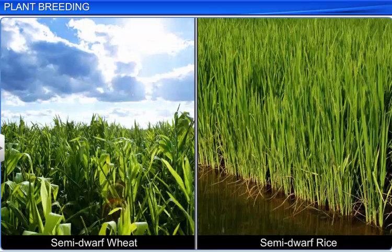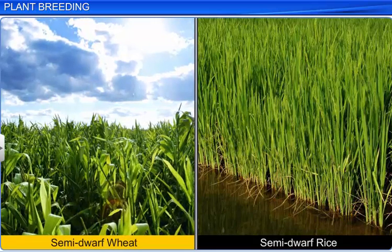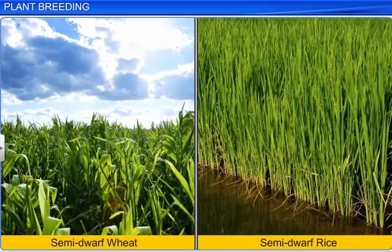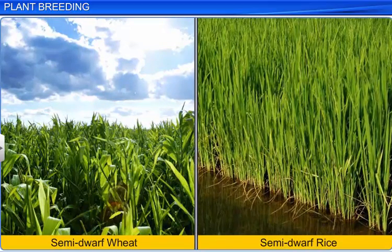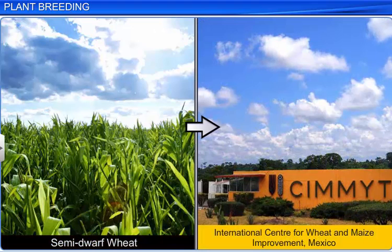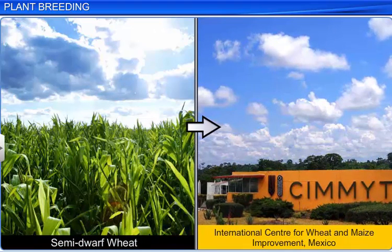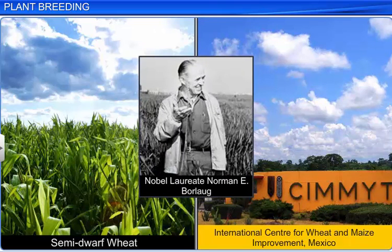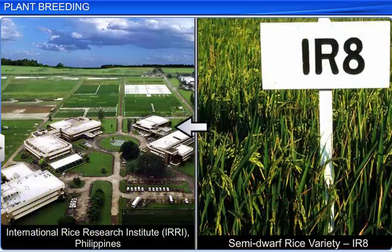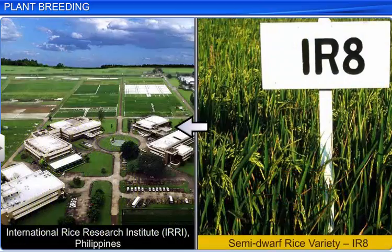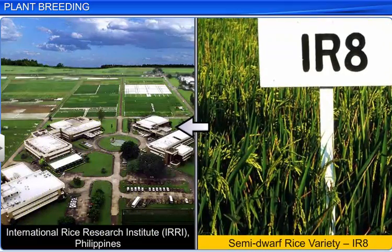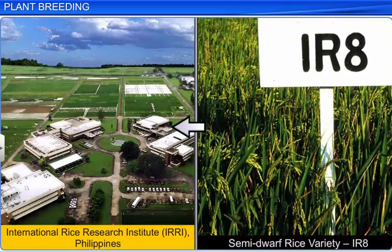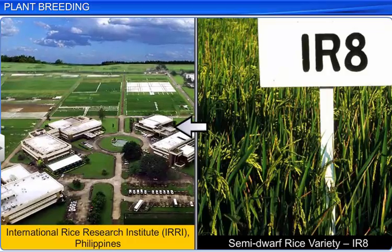The increase in production was credited to the semi-dwarf varieties of wheat and rice that were developed. The semi-dwarf wheat variety was first developed at the International Center for Wheat and Maize Improvement in Mexico by Nobel Laureate Norman E. Borlaug. Likewise, the semi-dwarf rice variety, IR8, was developed at the International Rice Research Institute, IRRI, in the Philippines.